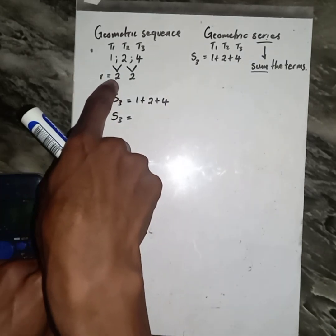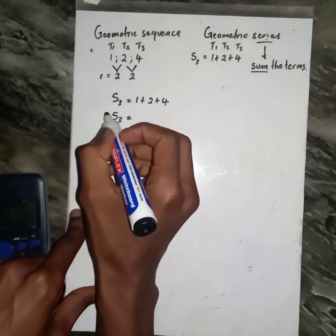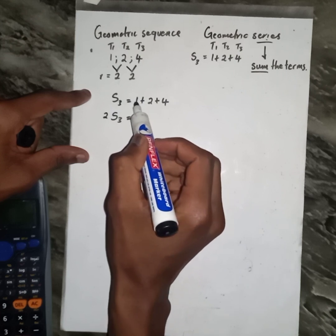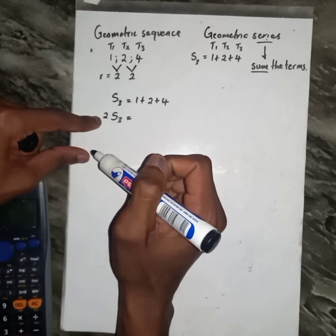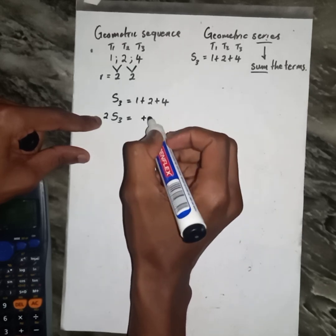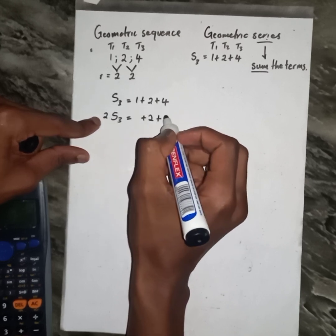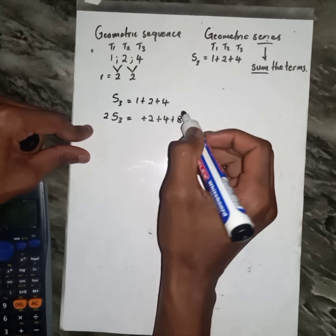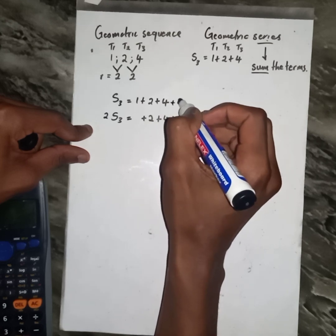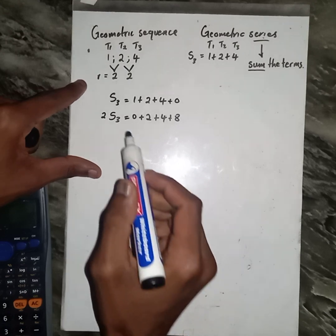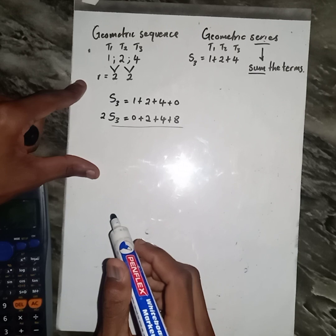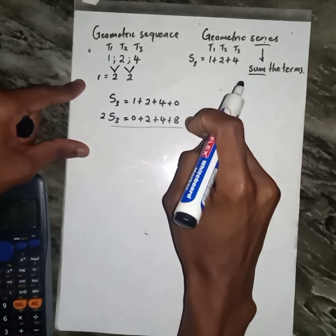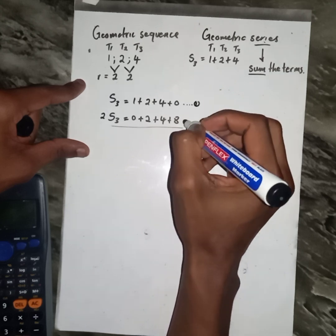We are going to multiply S by the value of r, which is 2. If I multiply 1 by 2, I get 2, aligned with this 2. Then 2 multiplied by 2 gives 4, aligned with 4. Then 2 multiplied by 4 gives 8. Since I have no number there, I write zero.